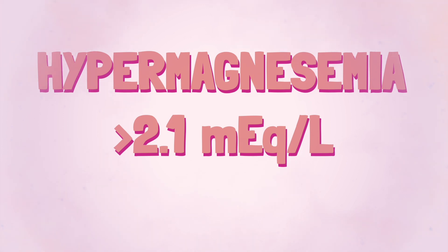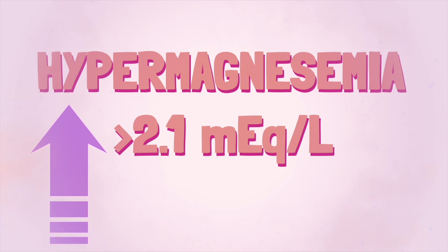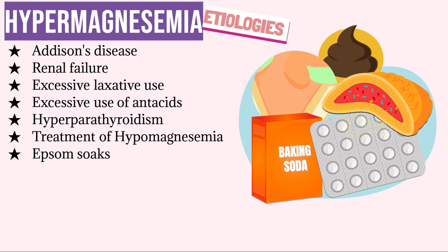Now let's move on to hypermagnesemia, which is when there is a serum magnesium level above 2.1 milliequivalents per liter. Patients with renal failure may experience hypermagnesemia since the kidneys may not be able to adequately excrete magnesium in the urine — because magnesium enters the body through the GI tract but is excreted in the urine, so elimination may be a problem for patients with renal failure.